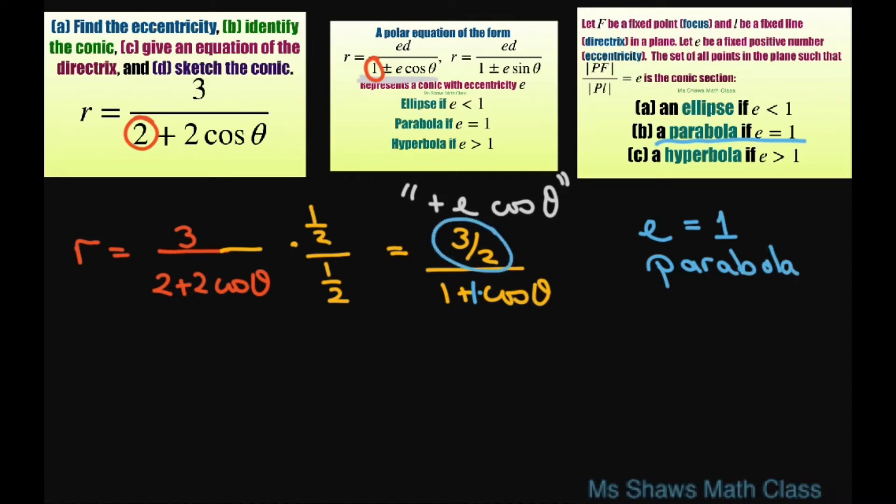3 halves equals ed, this ed part right here. With e equals 1, we get 3 halves. This is going to be 1, so we get 3 halves equals d.